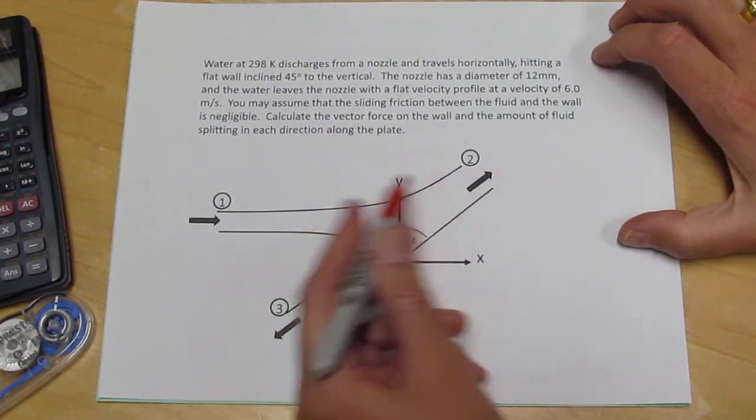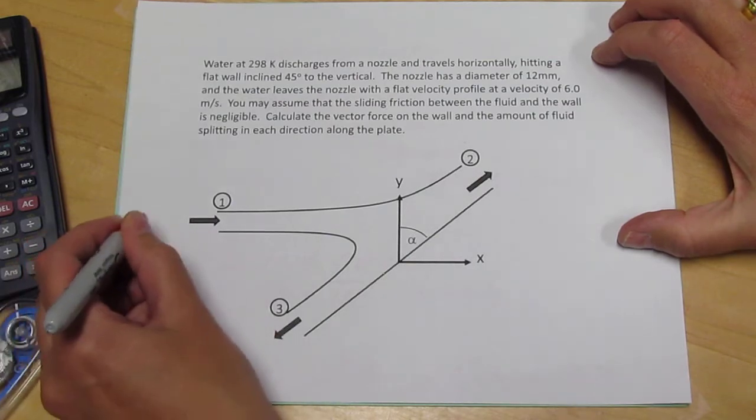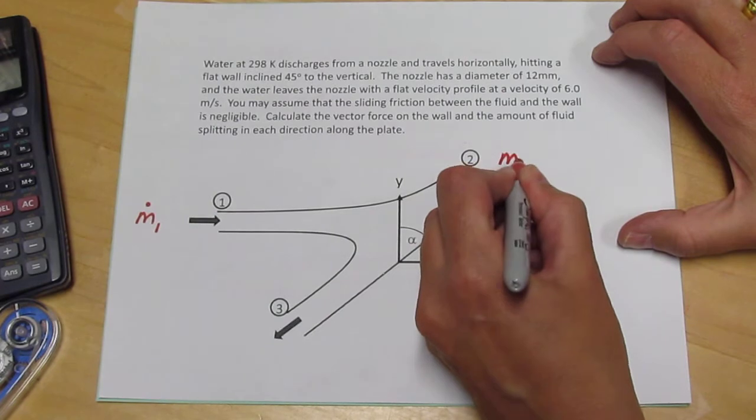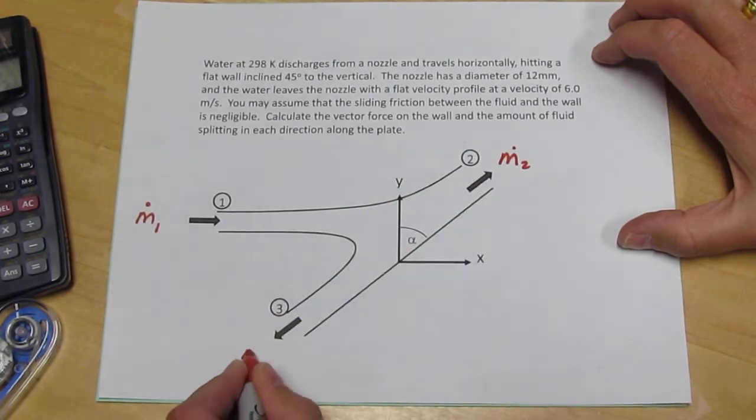So I've sketched the problem here and I have some sort of a mass flow rate of fluid entering here and exiting in two different locations, one and two and three.